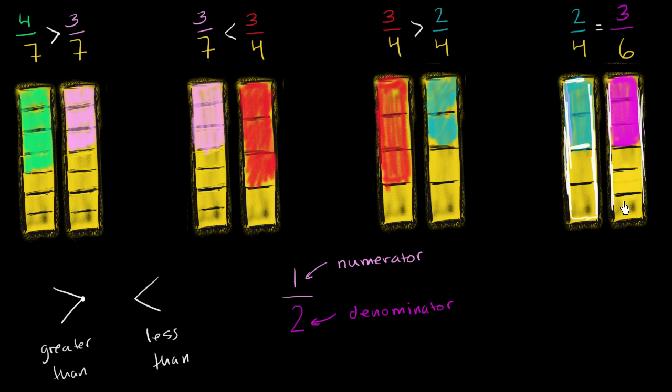One out of the two sections. So you could say that 2 fourths is equal to 3 sixths. And they both equal 1 half. They all equal. So 1 half is equal to 2 fourths is equal to 3 sixths.